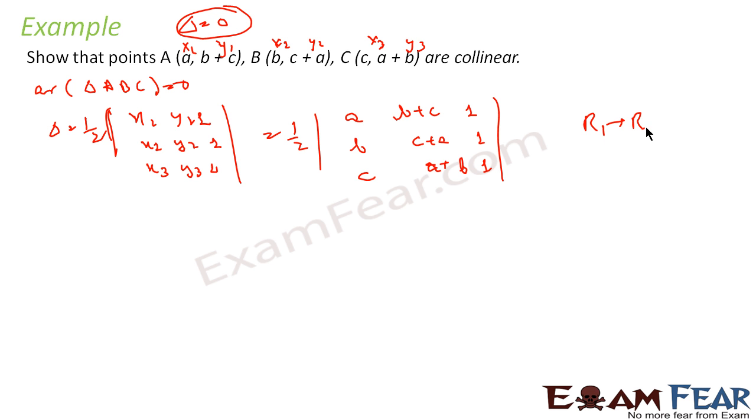I'll say C1 equals C1 plus C2. So this becomes 1 by 2. Sorry, C1 equals C1 plus C2. I am taking column operation. So this becomes a plus b plus c. This becomes b plus c plus a and this becomes c plus a plus b. This column is untouched and the next column is also untouched.